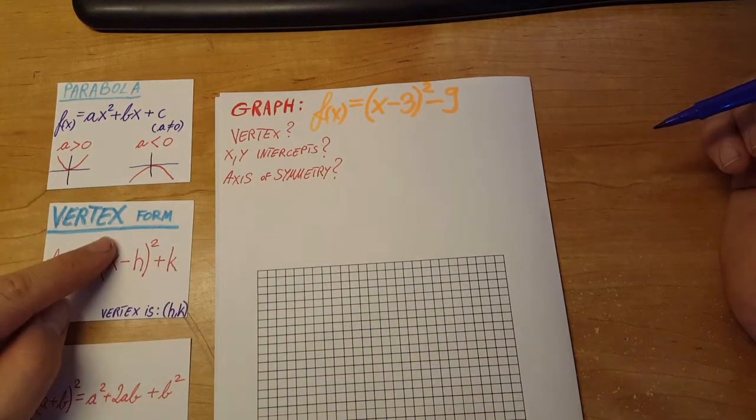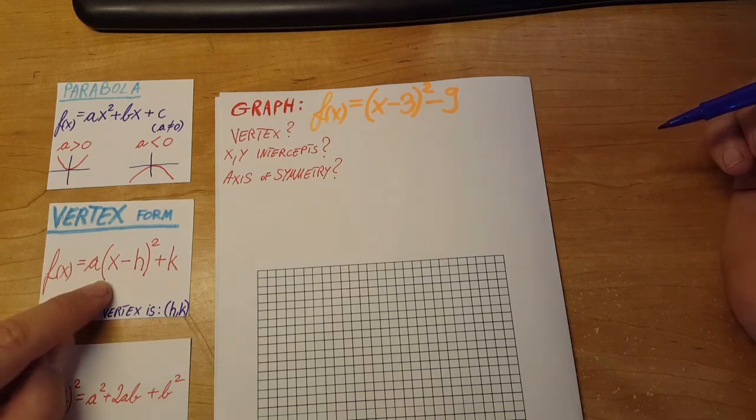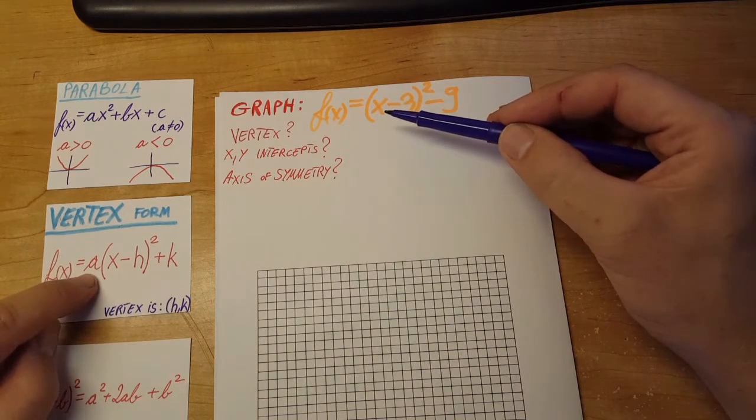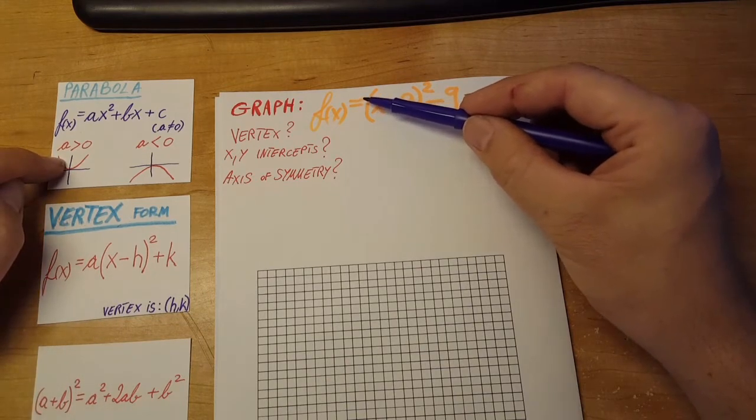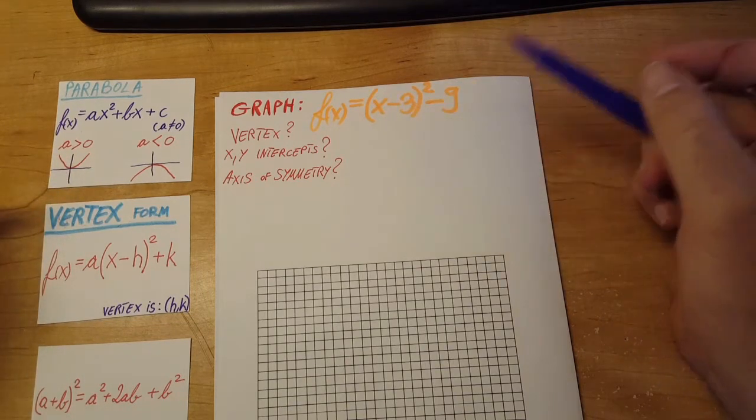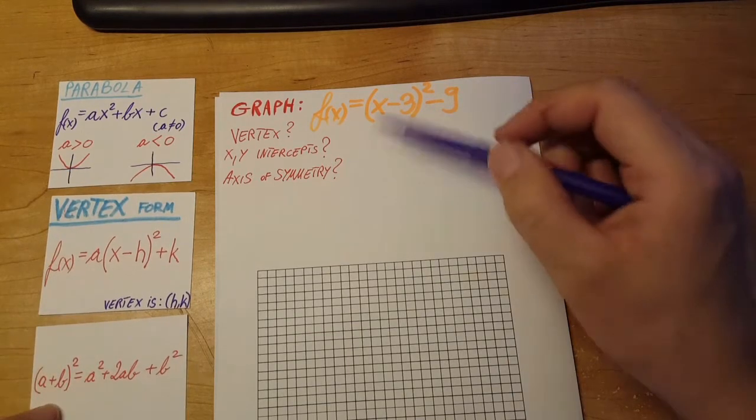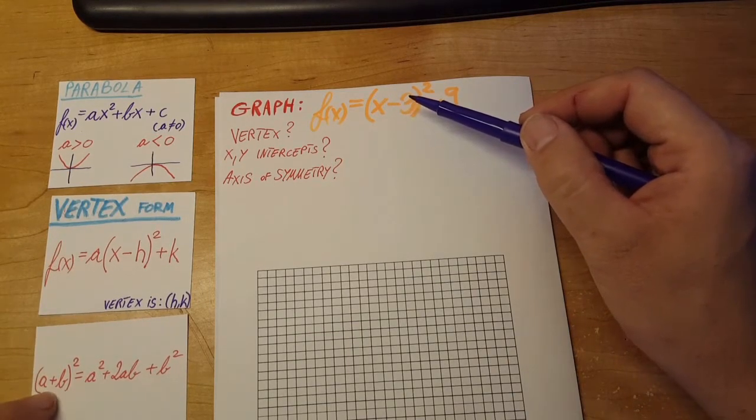This is in vertex form, so the a is in front of the parentheses. Is it positive or negative? For us, it's bigger than 0, therefore our parabola will open up. You can also double check by opening up the parentheses for this formula.